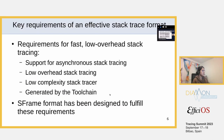None of these methods seem to fulfill the requirements of fast, low-overhead stack tracing. So what are the requirements? The format must support asynchronous stack tracing — that's the first and foremost requirement. The format must allow low-overhead stack tracing. The stack tracer itself should be low complexity. And importantly, it should be generated by the toolchain. This is where SFrame comes in, designed with these requirements in mind.